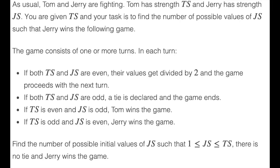Tom and Jerry are fighting. Tom has strength TS while Jerry has strength JS. If both TS and JS are even, their values get divided by two. If both TS and JS are odd, a tie is declared. If TS is even and JS is odd, Tom wins. And if TS is odd and JS is even, Jerry wins. We want to find the number of values of JS such that Jerry wins.